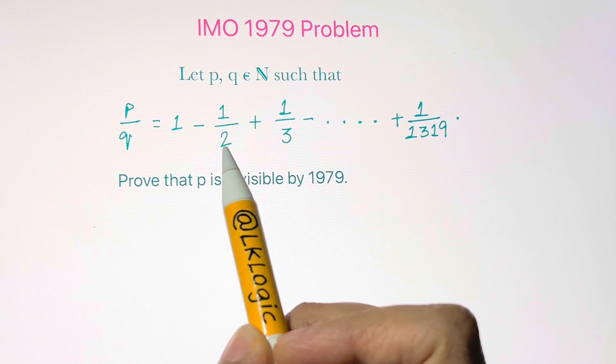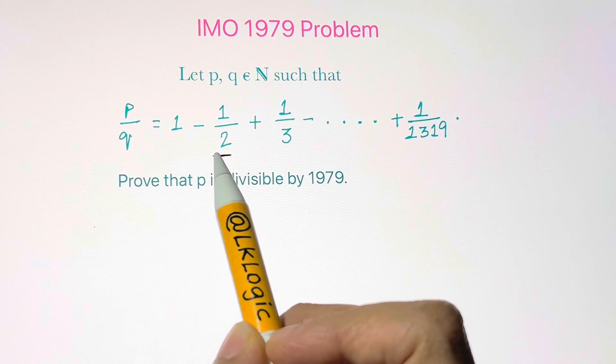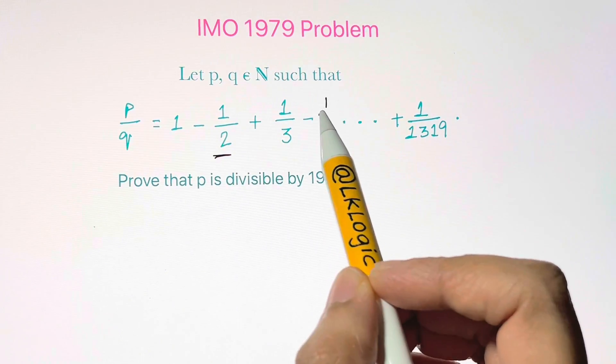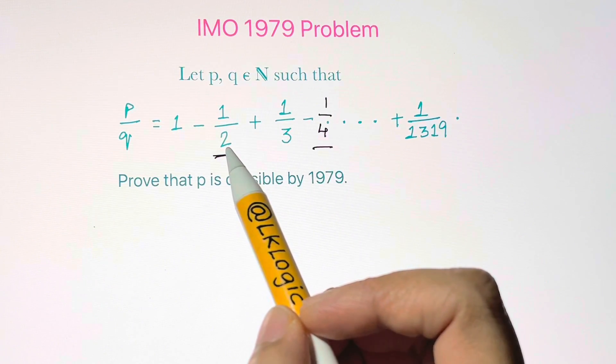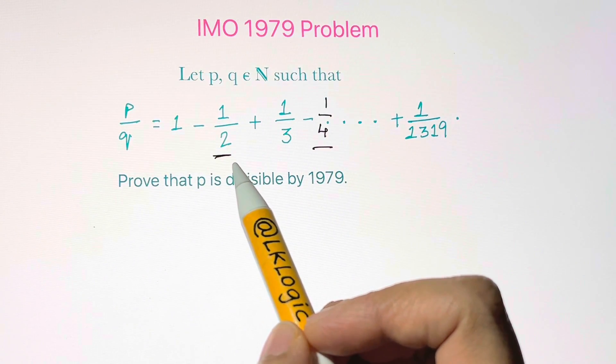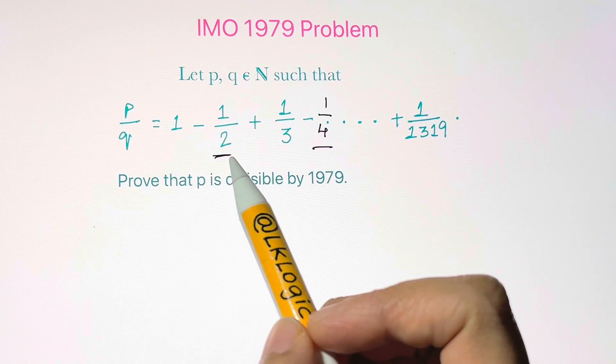The weak spot here is the minus terms which are 1 over the even numbers. So we're going to rewrite, regroup these even terms and see what we obtain from that.